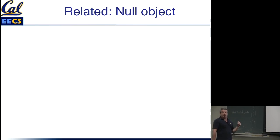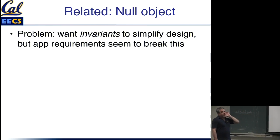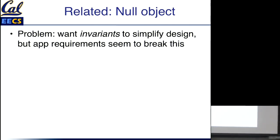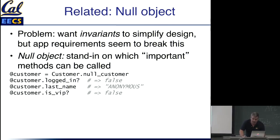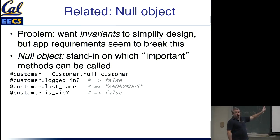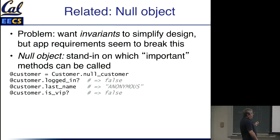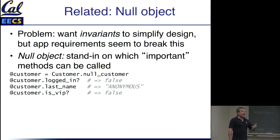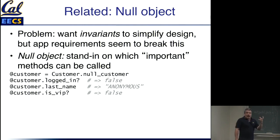My favorite of the other patterns is probably the null object pattern. The idea is that your design is simpler if there are some invariant things that are always true about a certain object and all subclasses of that object, but there's something about the implementation or requirements that makes it hard to do that. An example: there are a bunch of properties you can ask about a customer in my app, but in some places those calls are made when nobody has logged in yet.